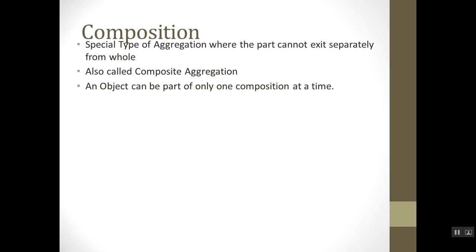An object can be part of only one composition at a time. This is a key difference from aggregation: in aggregation, a part can exist independently, but in composition, the part cannot exist independently. For example, consider a browser like Google Chrome and its tabs.